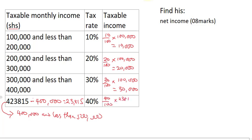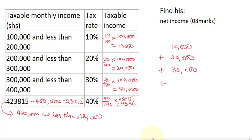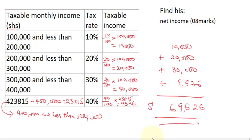Applying 40% to 23,815 gives us 9,526. We then sum up the tax at every level: 10,000 plus 20,000 plus 30,000 plus 9,526, which gives us 69,526. That is his total income tax.